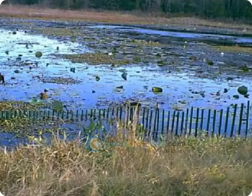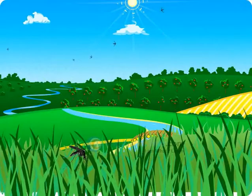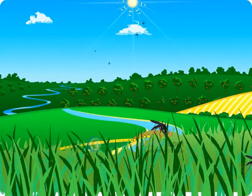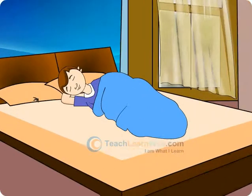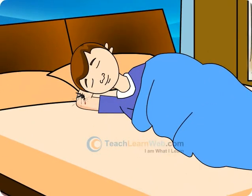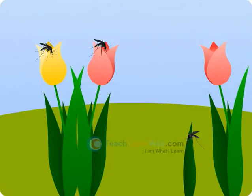Mosquitoes are found in damp and marshy places. The female mosquitoes feed on blood of humans and other vertebrates. The male mosquitoes suck juices of flowers and plants.